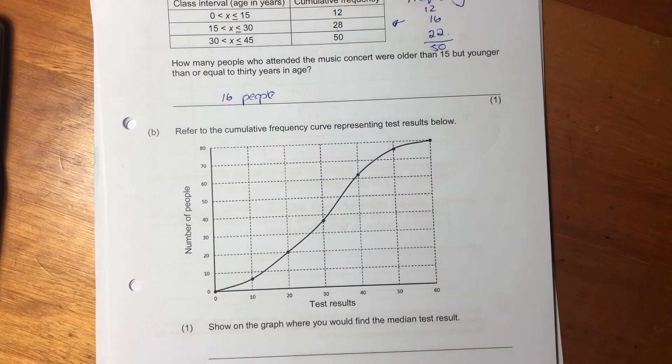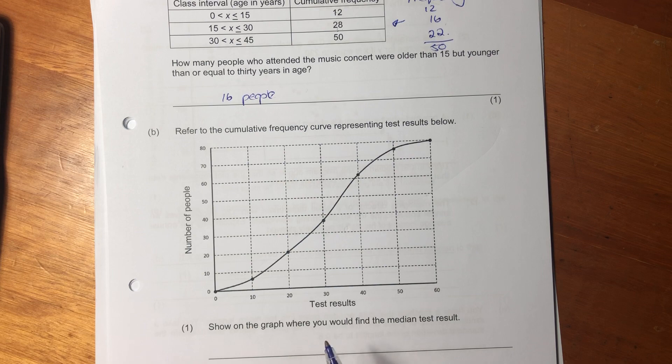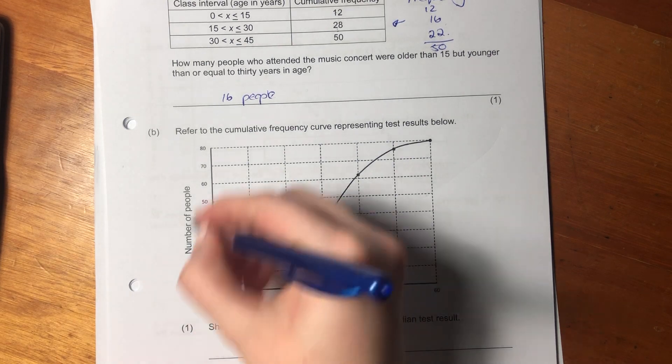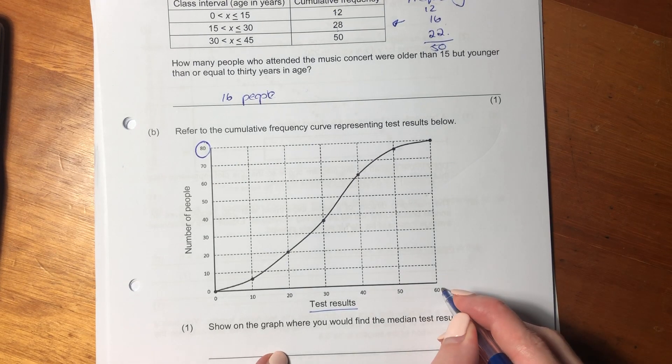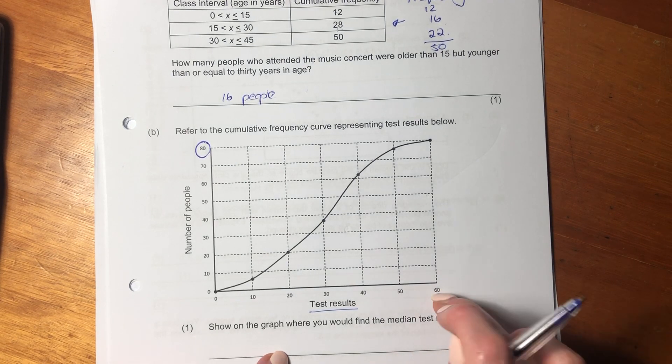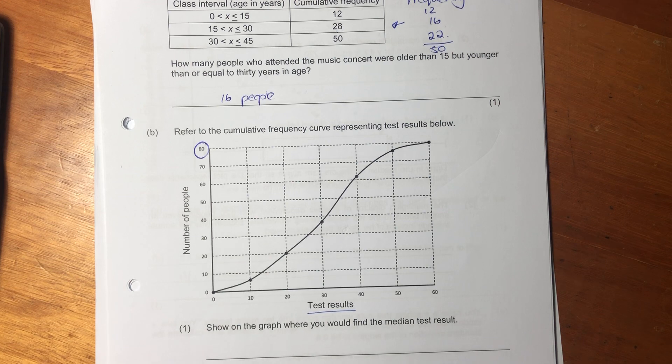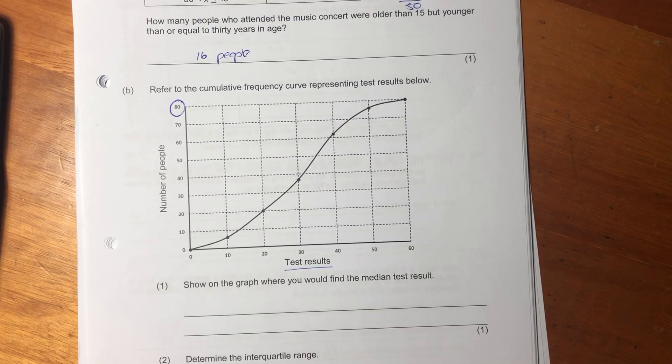Let's now move on to the next question. Refer to the cumulative frequency curve, also known as ogive, representing test results below. So here's the test results, and this is the number of people. So there's 80 people in total, that's important, and the best mark they could get was 60. So someone did get 60. Good job. Let's now look at the questions.